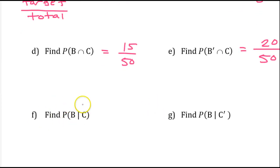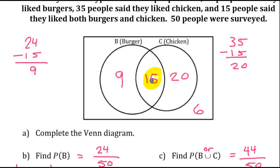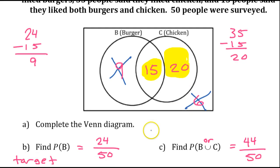Now, this vertical line right here is read given. So, this is the probability of B given C. And the way we do given problems is we highlight the given and we cross out everything else. So, we are given C. So, let us highlight C and cross out everything else. These are the C numbers. But we need to cross out everything else. So, we need to cross out the 9 and the 6.